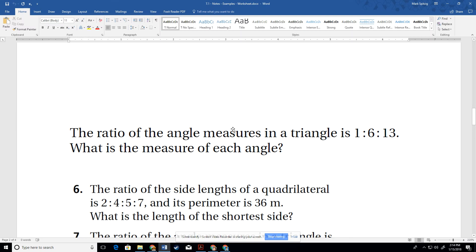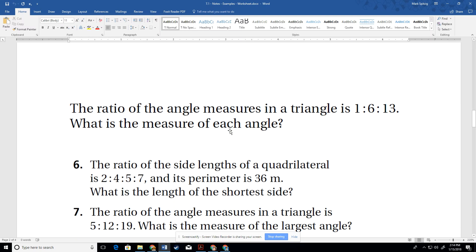All right, here we go with 7.1 answer key. So let's do this. All right, the ratio of the angle measures in a triangle is 1 to 6 to 13. So we got an extended ratio here.